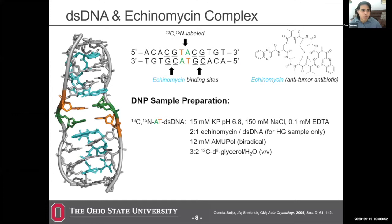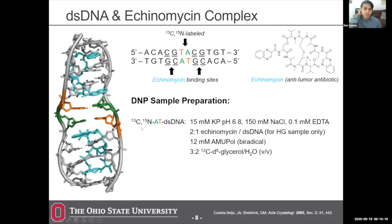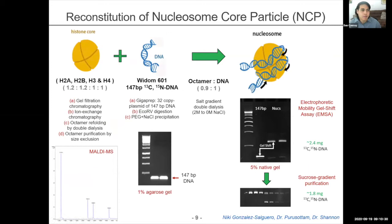Moving on to our first sample: we prepared DNA with the echinomycin complex. Echinomycin is an anti-tumor antibiotic that inserts itself into a DNA helix, causing torsion that causes Hoogstein base pairs to form in the middle. We preferentially labeled these residues with carbon-13 and nitrogen-15, added the AMUPol biradical as our polarizing agent, and prepared everything in glycerol and water.